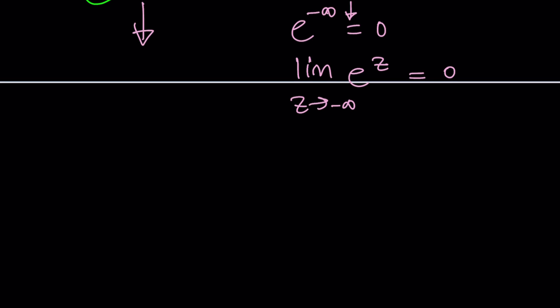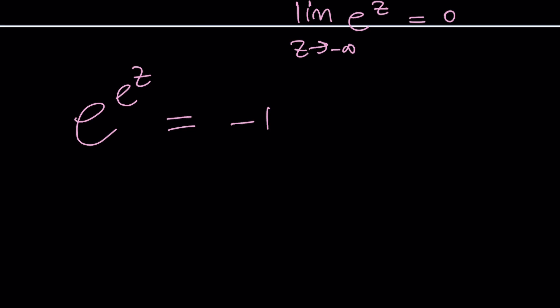We have e to the e to the z equals negative one. So how do we handle something like this? We're going to use Euler's formula, or polar form. The right-hand side can be written as a power of e in the complex world, right? Think about plotting negative one in the complex argon plane. Negative one appears right here. It's on the real axis because negative one is a real number. It's a complex number too, but it's also real.